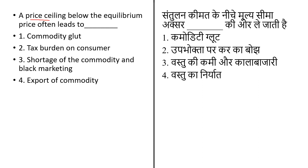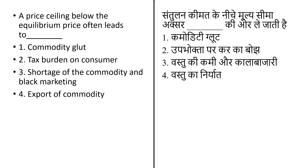Next question: a price ceiling below the equilibrium price often leads to — options: commodity glut, tax burden on consumer, shortage of commodity and black marketing, or export of commodity. A price ceiling is a government-imposed limit on how high a price can be charged for a product or service, used to protect consumers from prohibitively expensive goods. The answer is option 3, that is shortage of a commodity and black marketing.